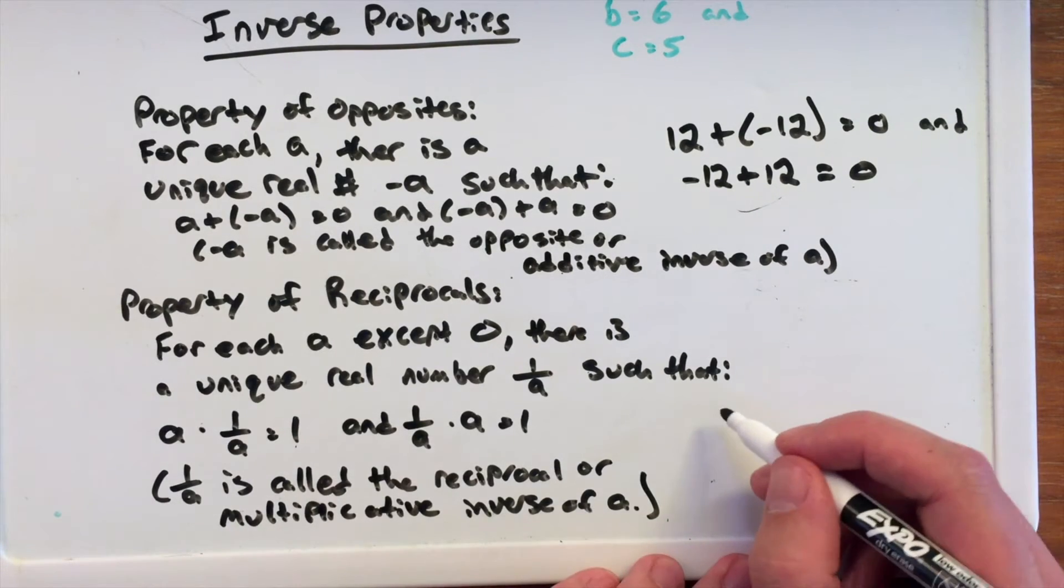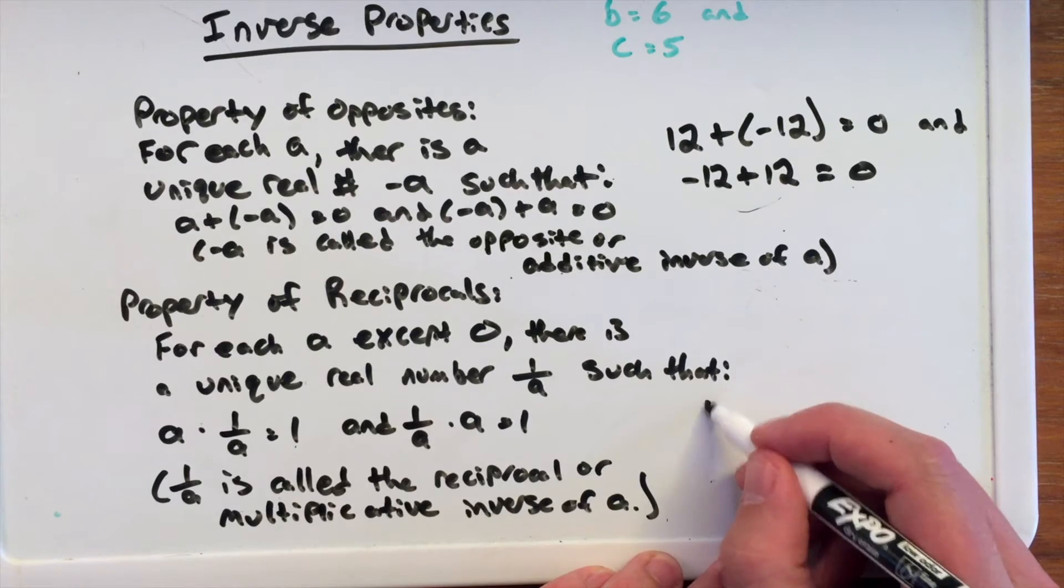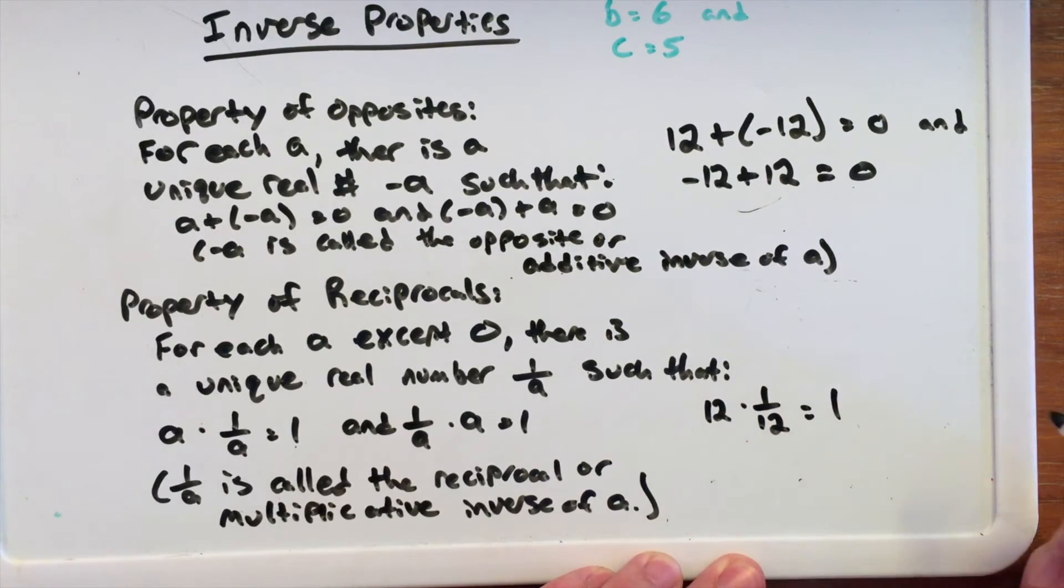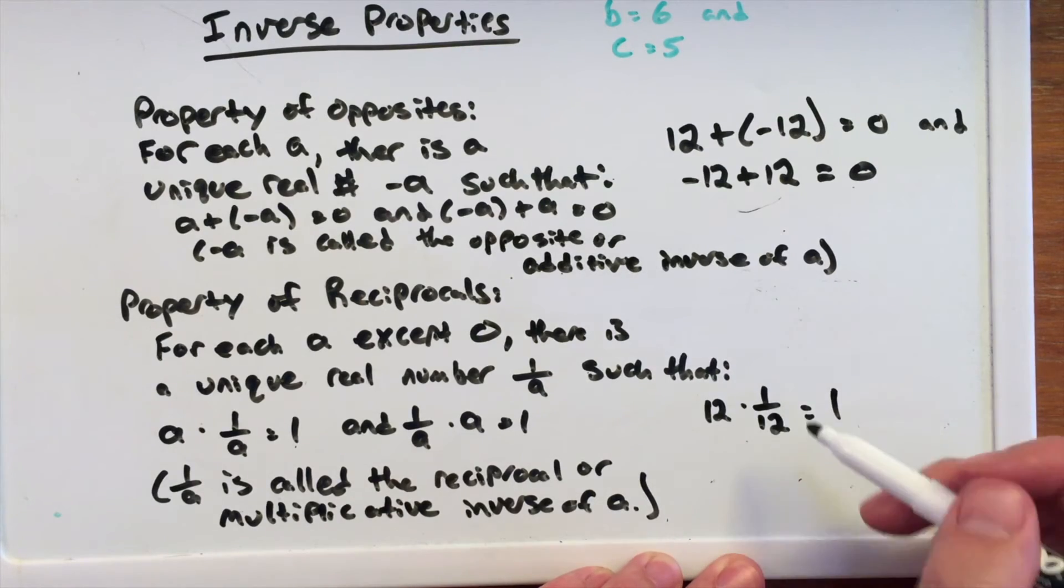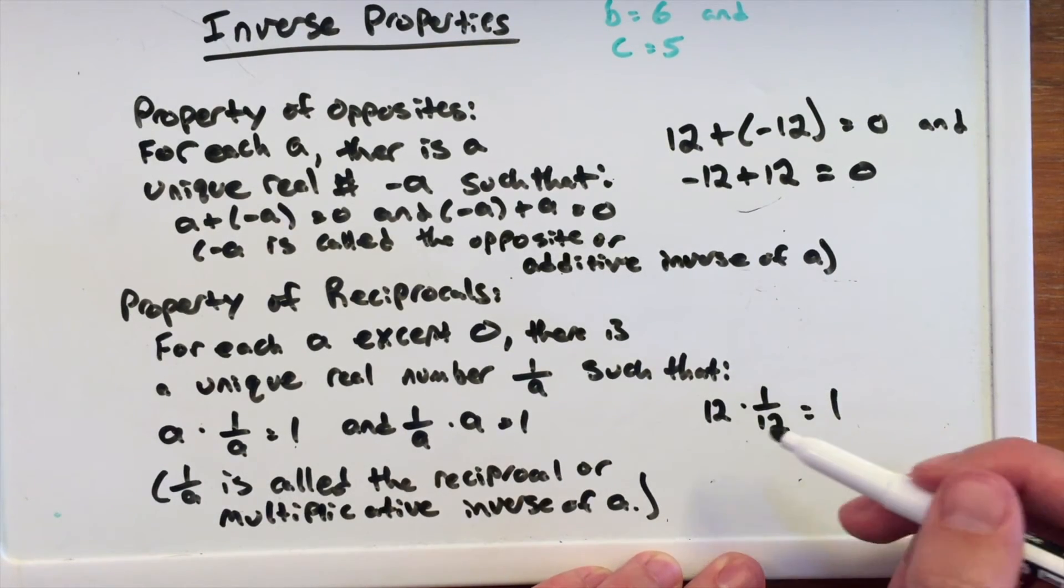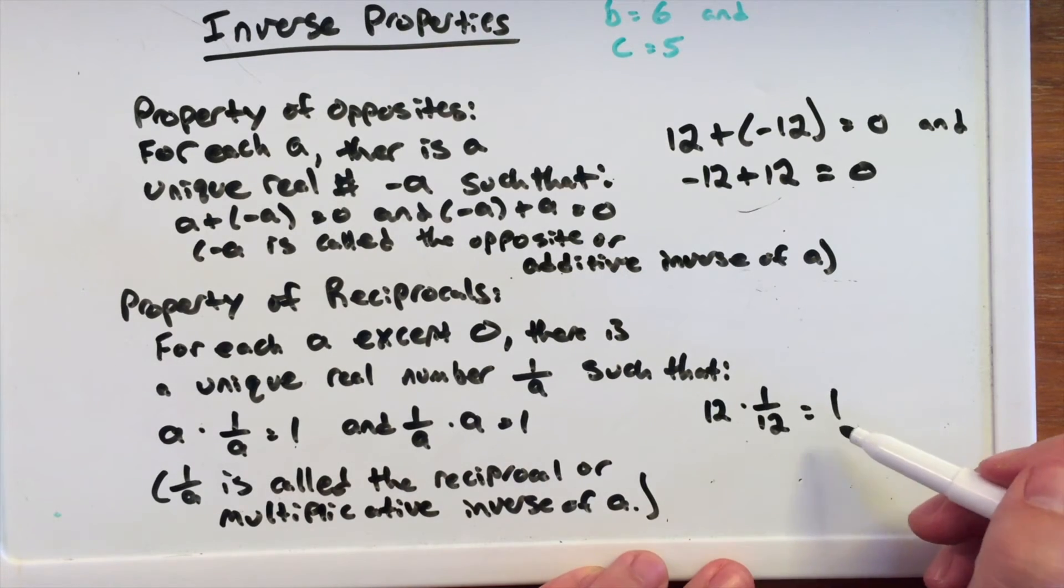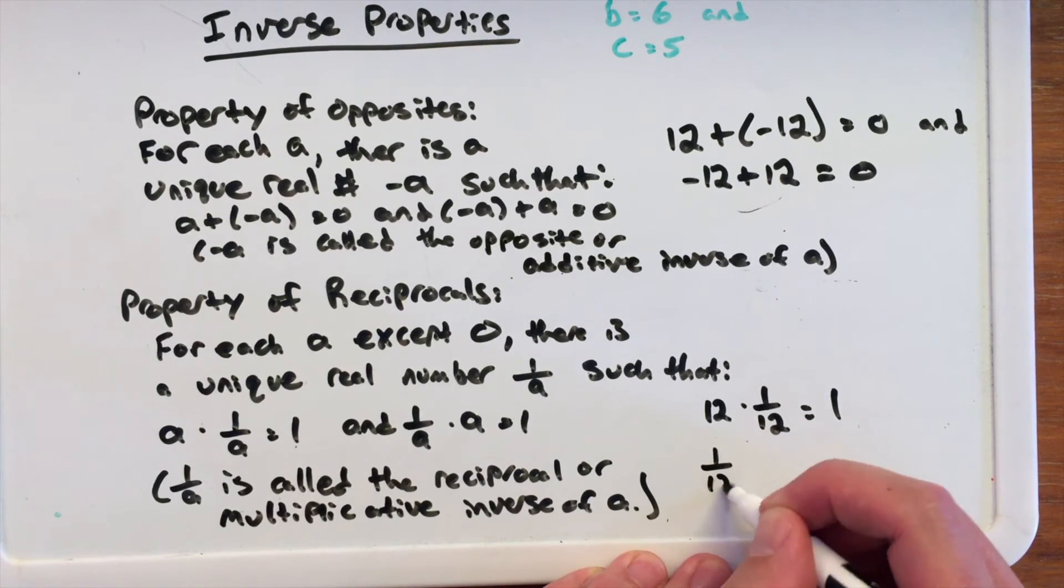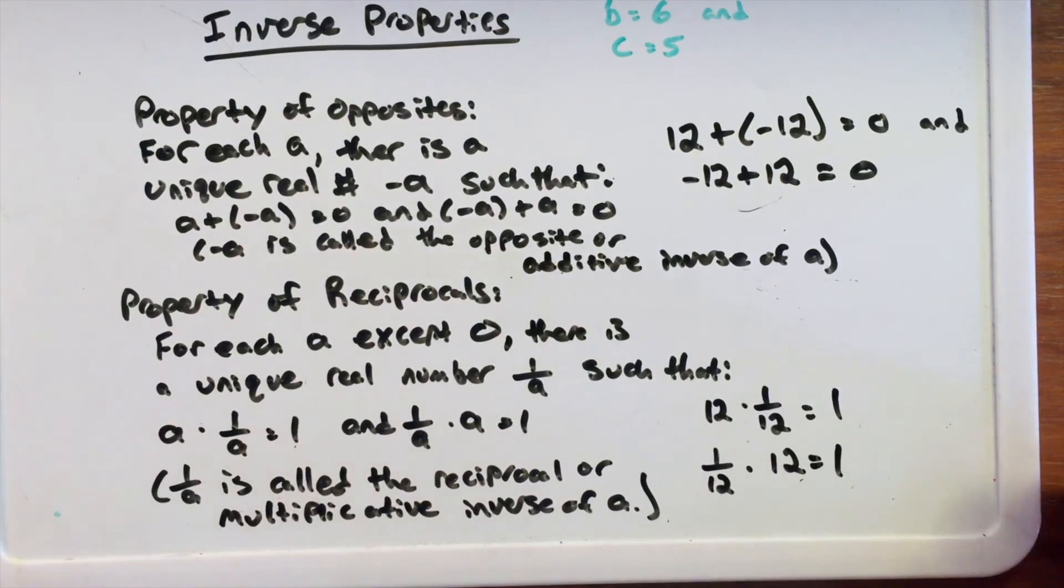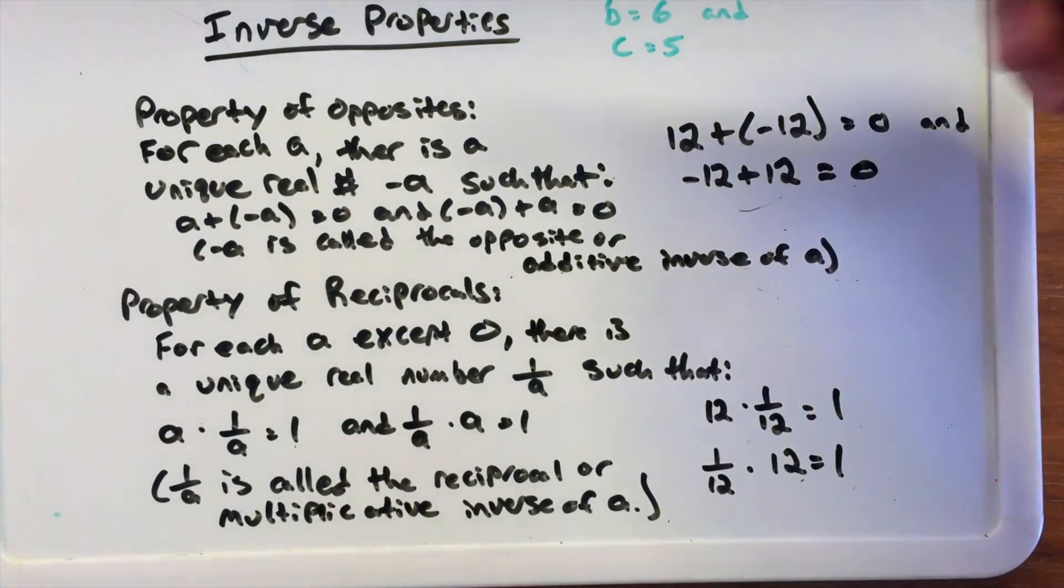So, for example here, with A being 12, we can say that 12 times 1 over 12, that equals 1, which is true. It cancels out here. 12 times 1 over 12, the same thing as 12 divided by 12, really, and that equals 1. And as well as flip it around, 1 over 12 times 12 equals 1. Thank you for watching, hopefully this was informative about the inverse properties.